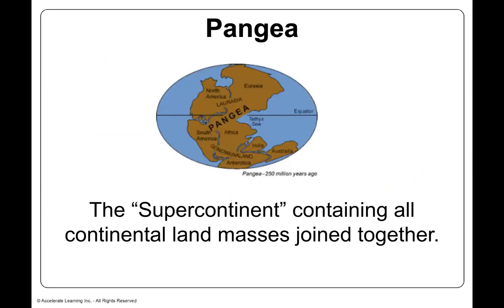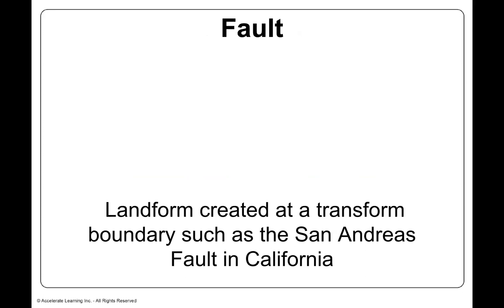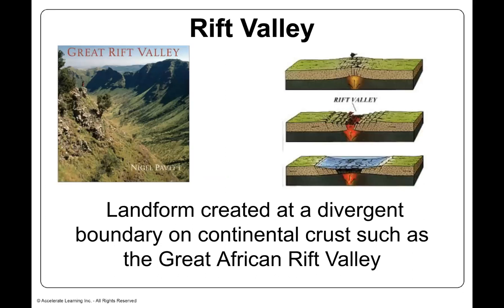The supercontinent containing all continental land masses joined together was Pangaea. Where two or more plates meet, that is called a boundary. The major plates include the Australian plate, the Eurasian plate, the Pacific plate, the North American plate, the Nazca plate, the South American plate, and the African plate. A landform created at a transform boundary is a fault line such as the San Andreas Fault in California. The Rift Valley is a landform created at a divergent boundary on continental crust, such as the Great African Rift Valley.